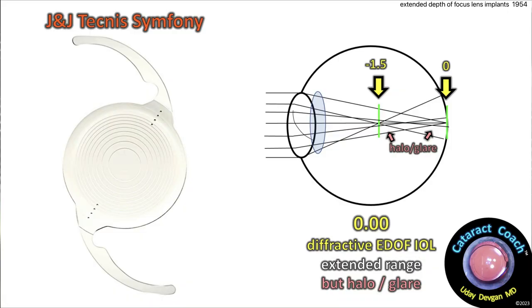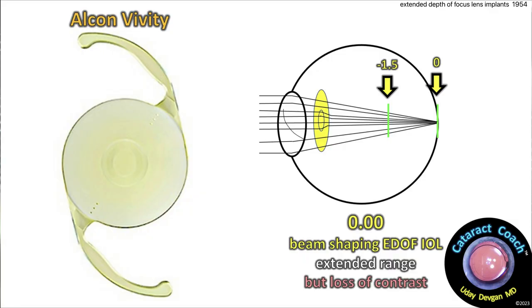Let's talk about the next lens: the J&J Tecnis Symphony. The Symphony line uses diffractive rings to give that extended depth of focus, and it certainly works. But what's the side effect? Yes, you get the extended range, but this lens — among all the lenses I've used — has probably the most nighttime dysphotopsias. Patients have reported to me glare, halo, and spider web effects on their vision. That ends up being a big challenge for a lot of patients.